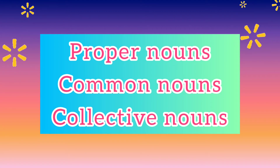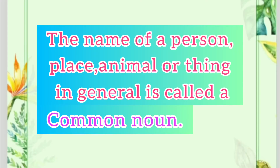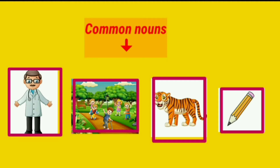You have already learned the difference between proper nouns and common nouns last year. So let's recall what is proper noun and common noun. The name of a person, place, animal or thing in general is called a common noun. For example, doctor, park, tiger, pencil are general names for person, place, animal and thing. Common nouns do not begin with a capital letter. All common nouns have their plural forms.